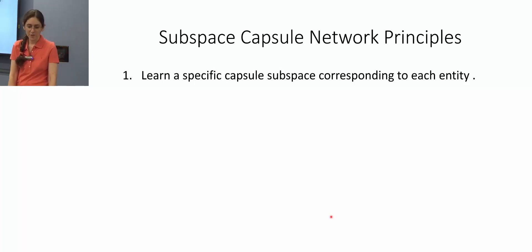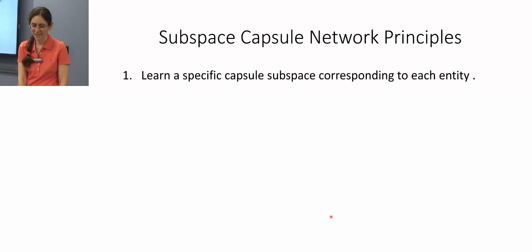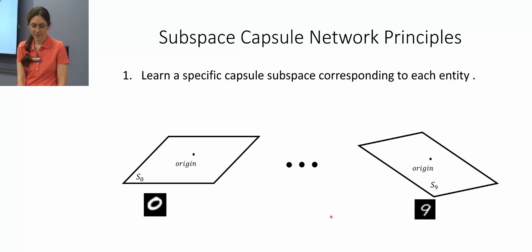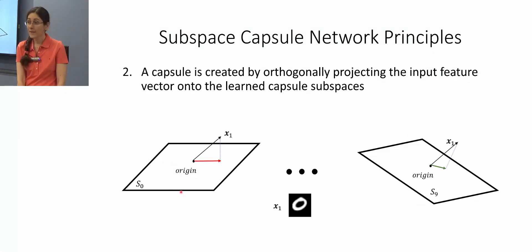Generally speaking, subspace capsule network works based on two principles. The first is that it learns a specific capsule subspace corresponding to each entity or part of that entity. For instance, if we are doing image classification for MNIST dataset, at the top level the model learns a specific capsule subspace for each digit. The actual capsule is then created by orthogonally projecting the input feature vector onto the learned capsule subspaces.